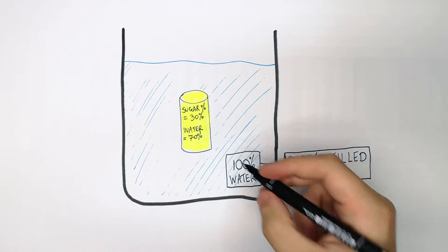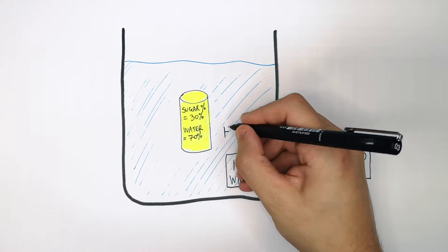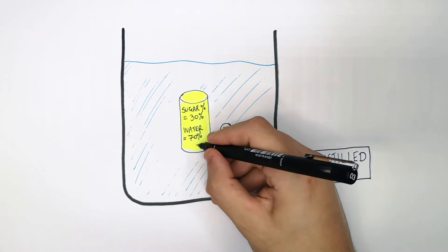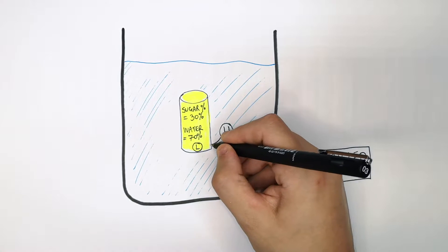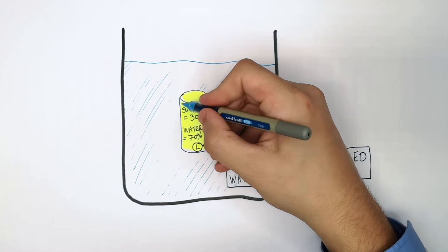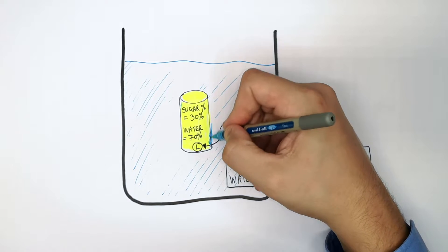Now you write a H where there's a high concentration and an L where there is a lower water concentration. And you draw the arrow to show water movement. Now we're going to show the change in appearance.